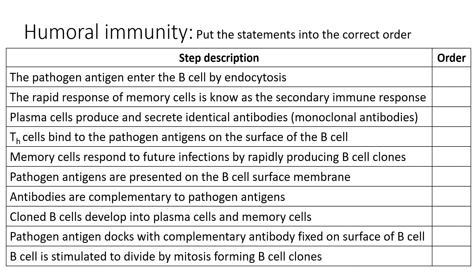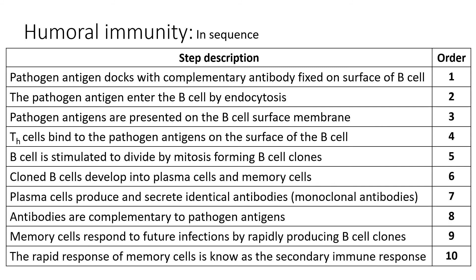We're back to the full text from the start of the process. This time the statements have been shuffled into an incorrect order, and your task is to think back over the process of how B cells work and put them into the correct sequence. Pause the video now, work out your order, and when you're ready play back to get the answer. The correct sequence is then shown — you may want to take a screenshot of that slide and annotate any additional notes to help you remember the process.